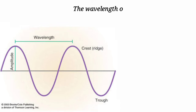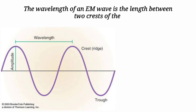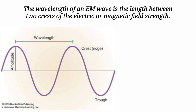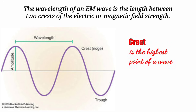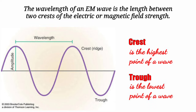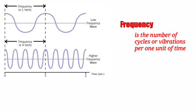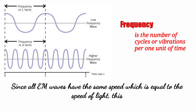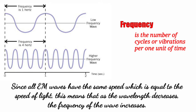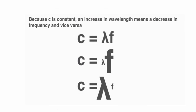The wavelength of an EM wave is the length between two crests of the electric or magnetic field's strength. Crest refers to the highest point of a wave, while trough is the lowest point of a wave. The frequency of a wave refers to the number of cycles or vibrations per one unit of time. Since all EM waves have the same speed equal to the speed of light, as the wavelength decreases, the frequency of the wave increases. Because C is constant, an increase in wavelength means a decrease in frequency and vice versa.